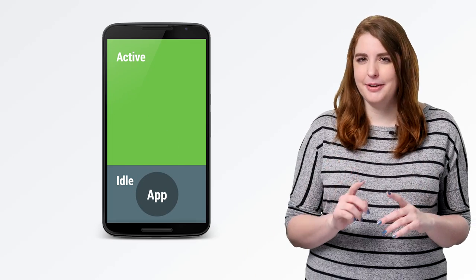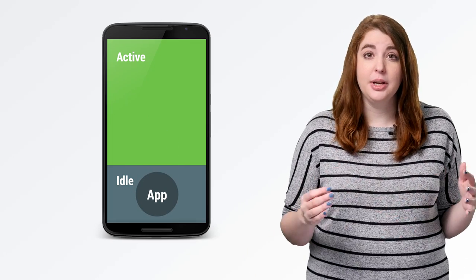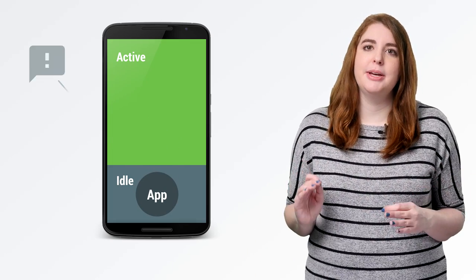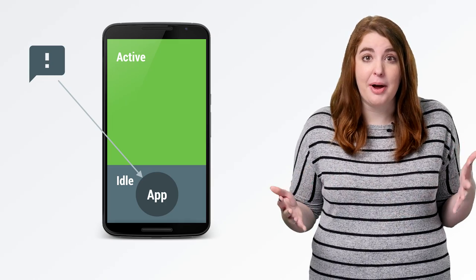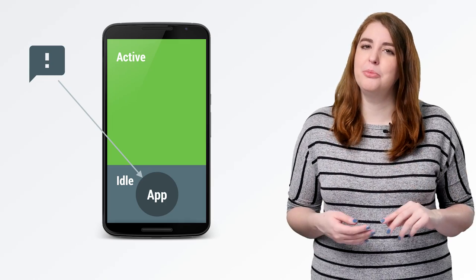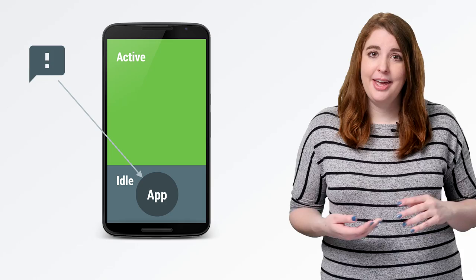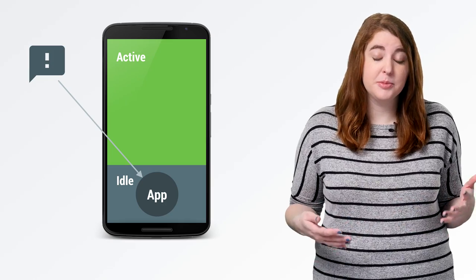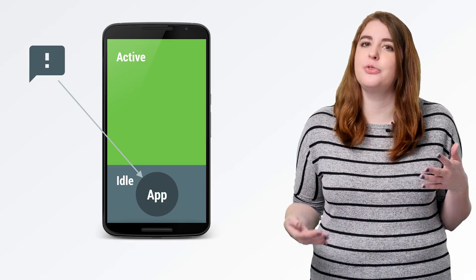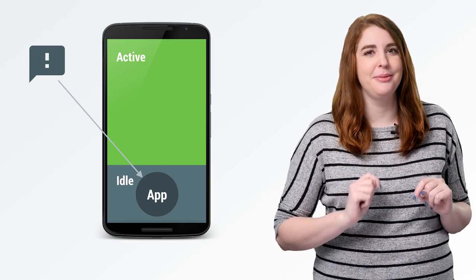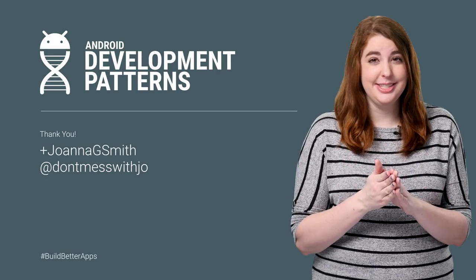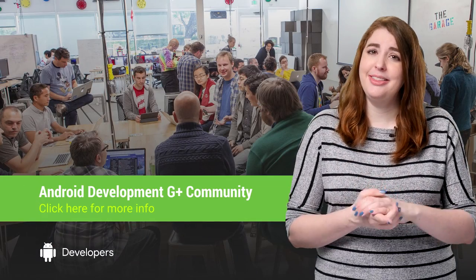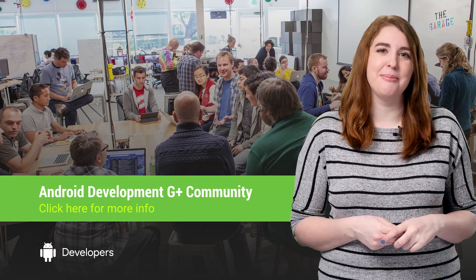But if you notice something funny while testing, you can modify your approach. GCM messages marked with a high priority tag will reach your app even through App Standby, so that you can react to important information coming from your server. Wake locks and alarms are honored in this idle mode, so if you need to react to a particular time, you can. But for most apps, there should be very little work involved, which means that all you need is to test your code and then take a nap in order to build better apps.